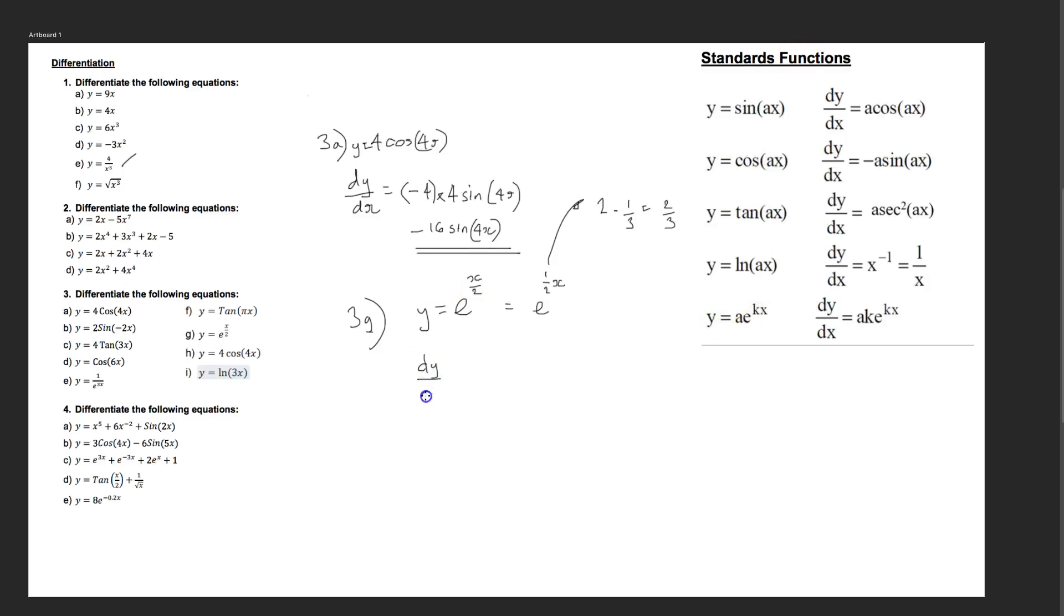So we'll apply our standard function to this situation. So dy/dx is equal to ae to the kx. So a stays where it is. This is 1e to the half x, effectively. Times the k, which is the coefficient in front of the x. So that would be a times k. So 1 times a half. So there's 1 half. E, which is our original equation, to the kx. So that's nothing changing there, to the half x.